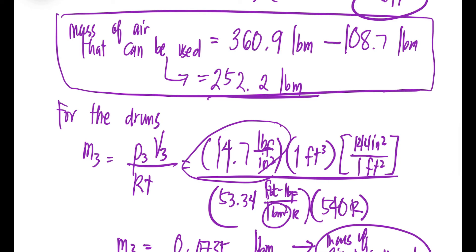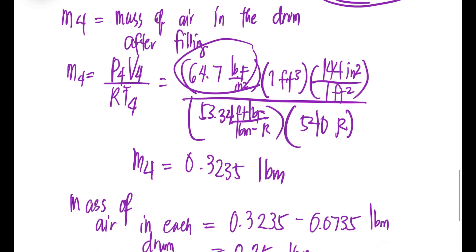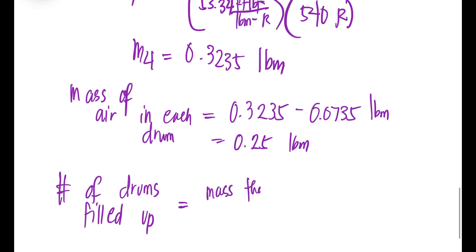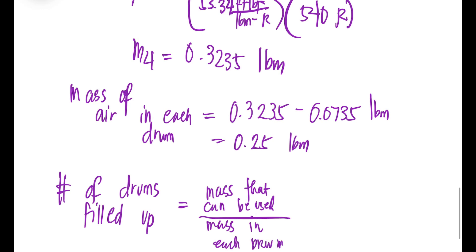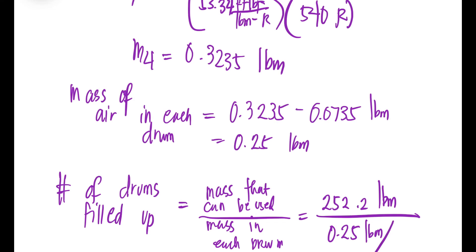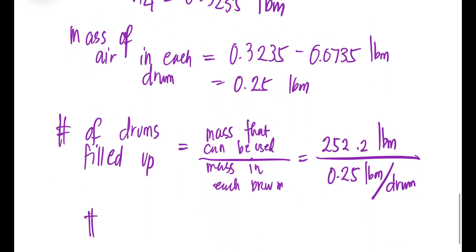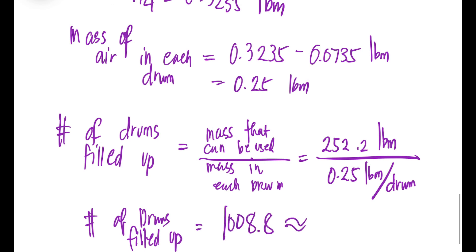The mass that can be used was computed as 252.2 lbm. Dividing by the mass of air in each drum — 0.25 lbm per drum — the number of drums that can be filled is approximately 1008.8, which rounds to approximately 1009 drums.